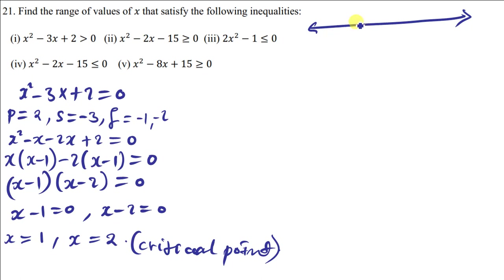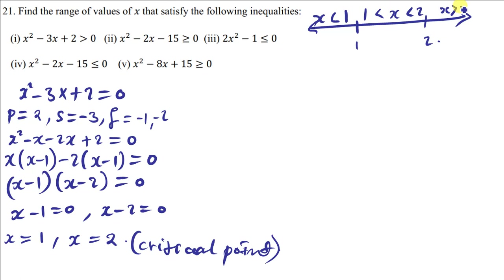The two critical points are 1 and 2. Numbers to the left of 1 are values of x less than 1. Numbers in between are values of x between 1 and 2. Numbers to the right are values of x greater than 2. I'm going to write the same expression with the greater than symbol.